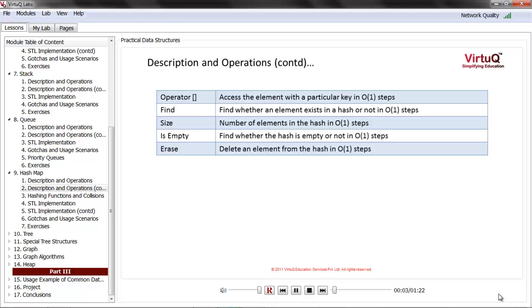The efficiently supported operations in case of a hash map: the square bracket operator, just like the operator we've seen in vectors or arrays, accesses the element with a particular key in constant steps. Find operation—finding whether an element exists in a hash or not—is done in constant steps. Size, the number of elements in the hash, returns this in constant steps. isEmpty, which works on top of size, finds whether the hash is empty or not in constant steps. Erase deletes an element from the hash in constant steps.